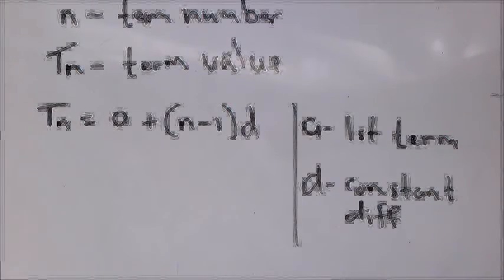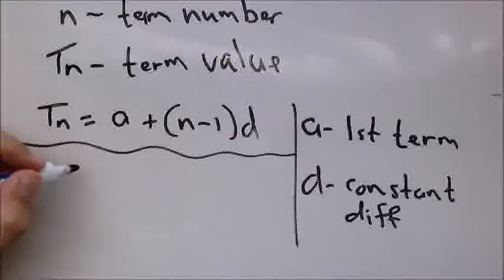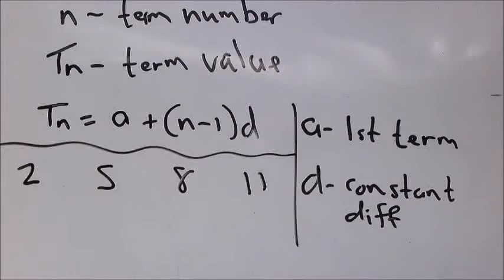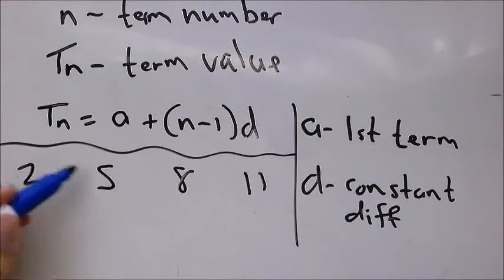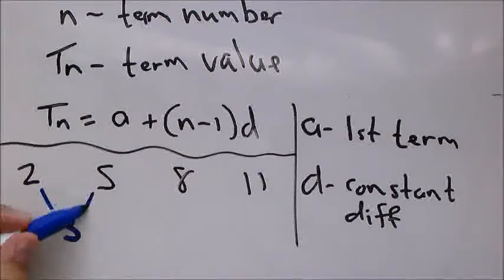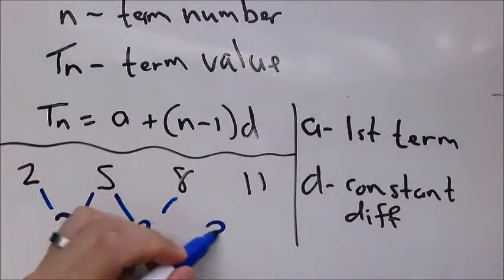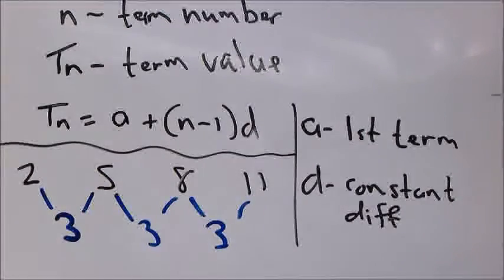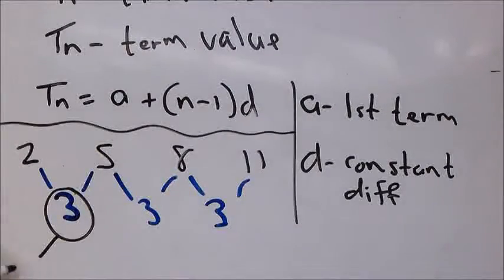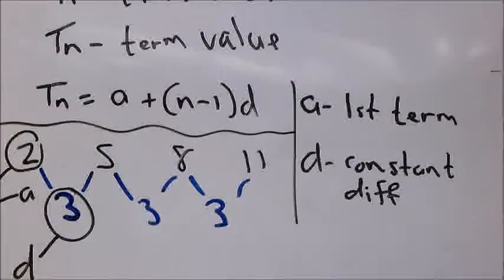As an example, let's say we have a sequence that looks like this: 2, 5, 8, 11. You'll notice there's a constant difference of 3 between each term. Two plus 3 gives me 5, five plus 3 gives me 8, eight plus 3 gives me 11. That's basically how this works. In this case, 3 equals d and 2 equals a.